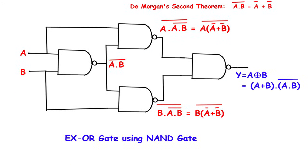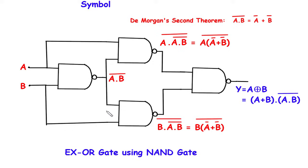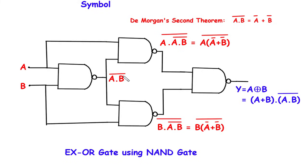Now we have to make XOR gate using NAND gate. Here we can see there are total 1, 2, 3, and 4 NAND gates used. Here A and B are the inputs. From this first NAND gate the output will be A dot B bar. At this stage the output will be A, which will be one input for the next NAND gate, and A dot B bar will be the other input for that NAND gate.